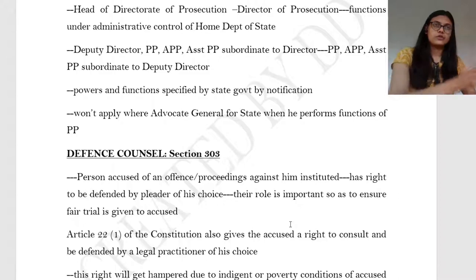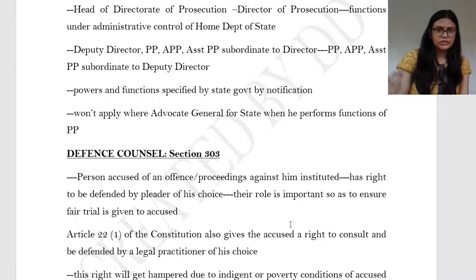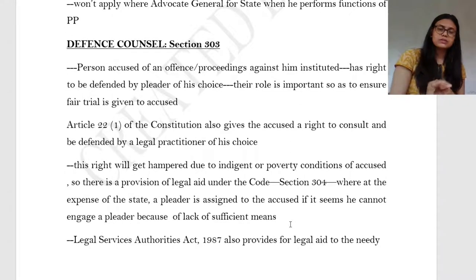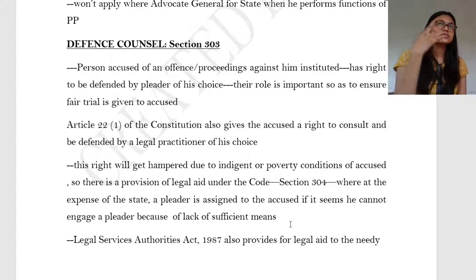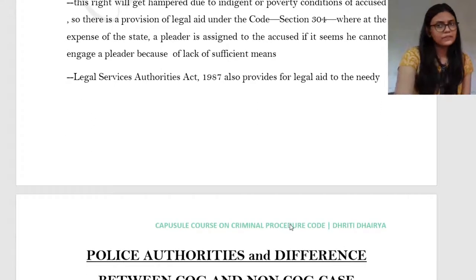Sometimes an accused does not have the means to hire a lawyer — he is indigent or poor. To ensure that fair trial is not hampered, there is a provision of legal aid under Section 304, where the state will bear the expense and a pleader will be assigned to the accused where it is seen he cannot engage a pleader due to insufficient means. The Legal Services Authorities also play a very important role in this behalf, and the Legal Services Authorities Act 1987 also provides legal aid.